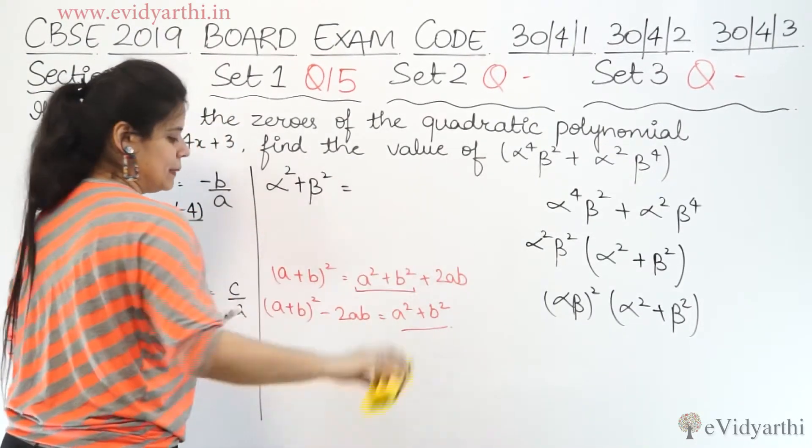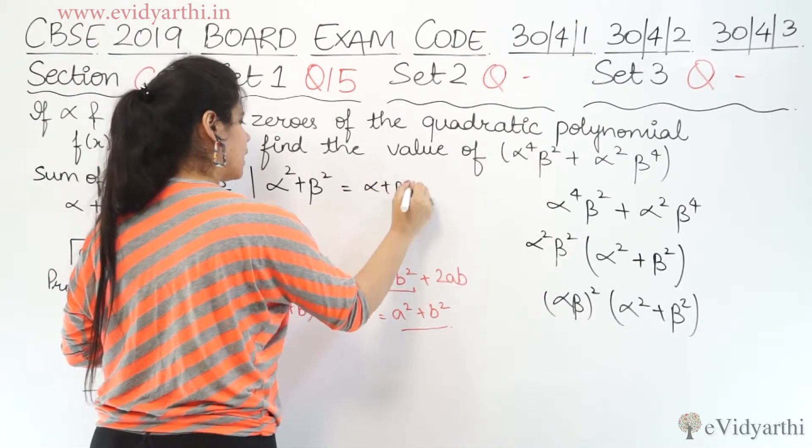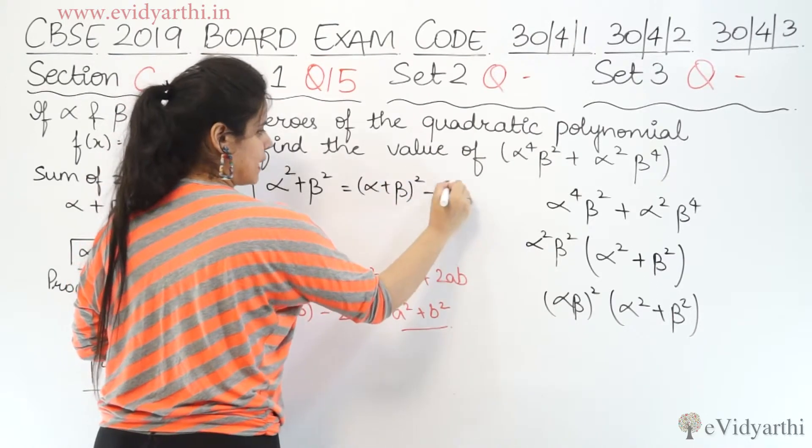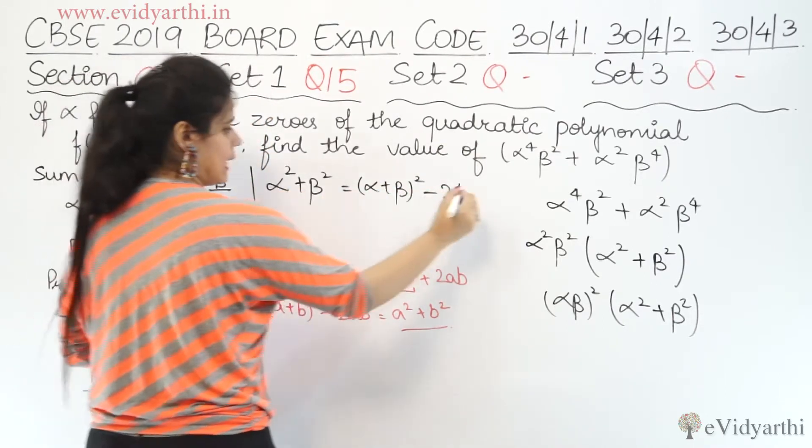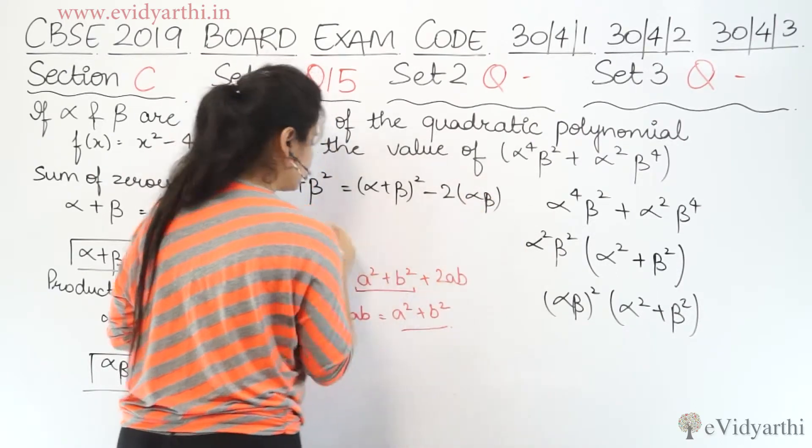Here we have alpha and beta. So that will be equal to alpha plus beta whole squared minus 2, a is alpha and b is beta, so here we have alpha into beta.